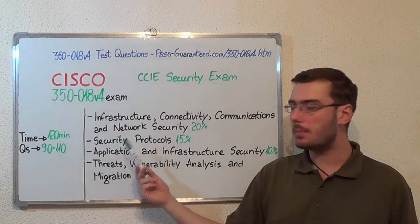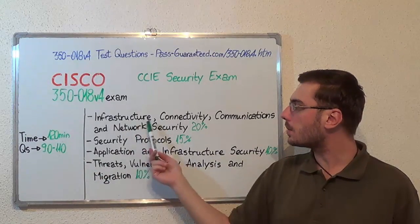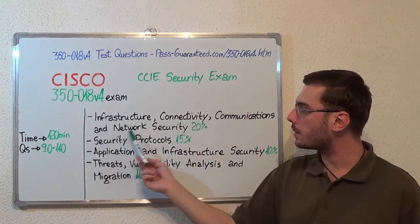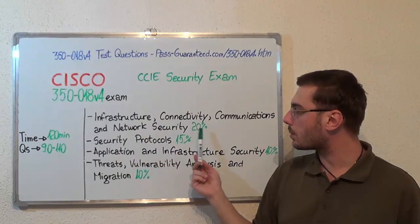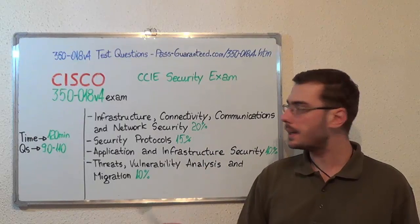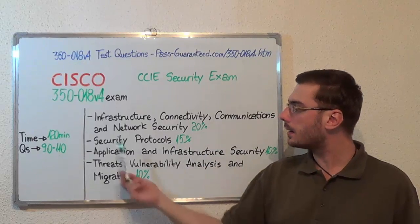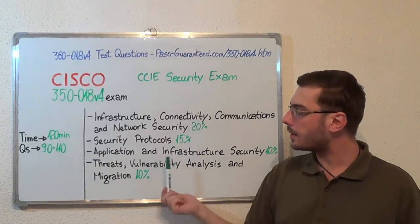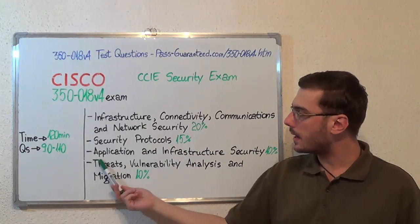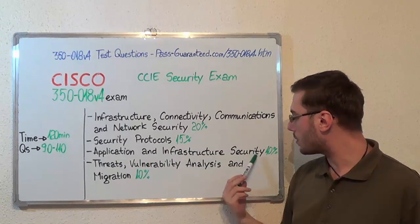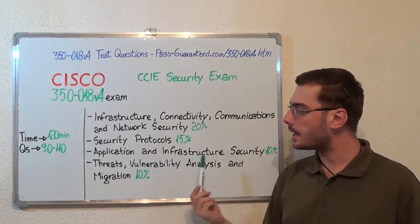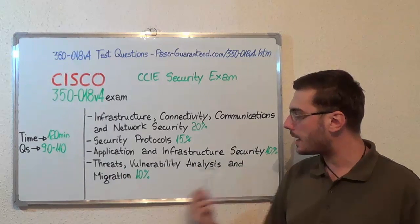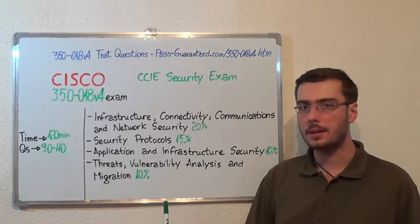Now let us know the exam topics. The first one: Infrastructure, Connectivity, Communications and Network Security, which makes up 20% of the total questions. Second, Security Protocols, with 15%. After that, Application and Infrastructure Security, with 10%. And the last one: Threats, Vulnerability, Analysis and Migration, with 10%.